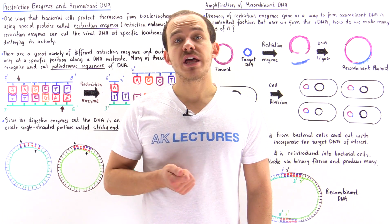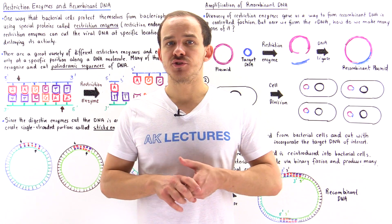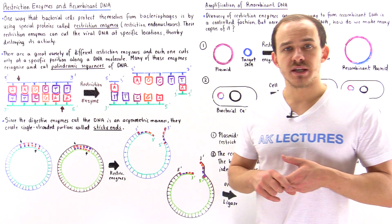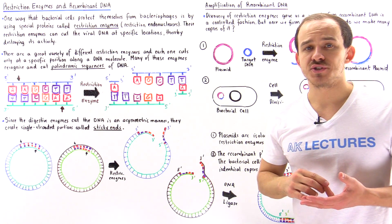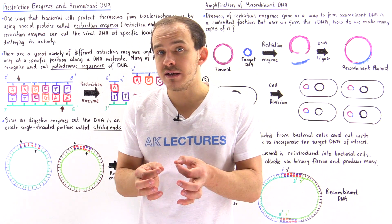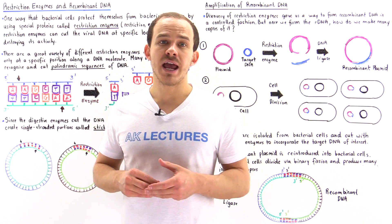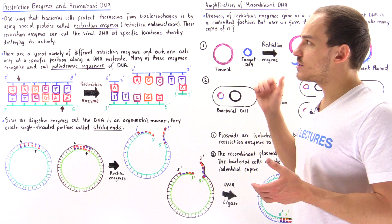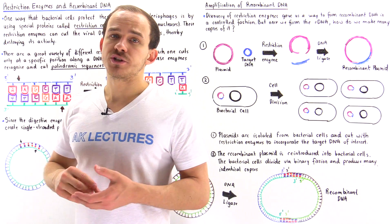When scientists began studying the way that bacterial cells protect themselves from different types of viral agents — from bacteriophages — they realized that inside bacterial cells are these special digestive enzymes known as restriction enzymes or restriction endonucleases. What these restriction enzymes do is they are able to cut or cleave the viral DNA molecule into many different pieces, thereby destroying and deactivating that viral DNA. So one way that bacterial cells protect themselves from bacteriophages is by using these special enzymes we call restriction enzymes.